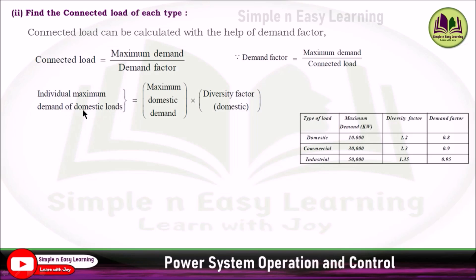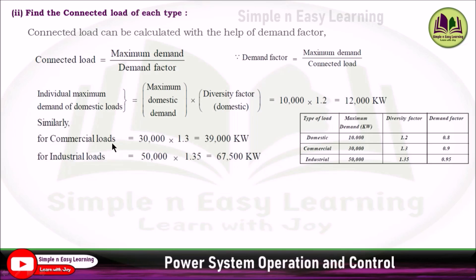Starting with domestic loads: maximum domestic demand is 10,000 multiplied by diversity factor 1.2, giving 12,000 kilowatt. Similarly, for commercial load: 30,000 multiplied by 1.3 gives 39,000 kilowatt. For industrial load: 50,000 multiplied by 1.35 gives 67,500 kilowatt. These are the individual maximum demands of each type.